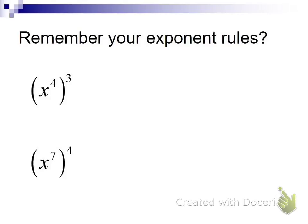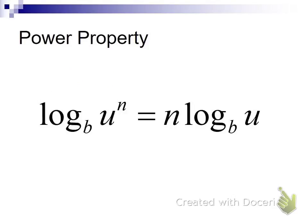Next rule: the last exponent rule is that if you were raising a power to a power, you multiplied those guys. So, an exponent raised to an exponent — you just multiply and make this x to the 12th; same thing, x to the 28th. Remember that logarithms are nothing more than an exponent. This is an exponent being raised to an exponent, so we should multiply those exponents together. We can rewrite this as n times log base b of u — in other words, pull the n down as a coefficient.